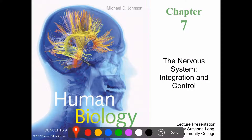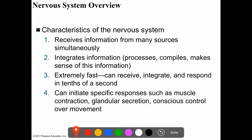Hello everyone, we are now in chapter 7 and we are going to study the nervous system. Think of the nervous system as the internet of the body, as it connects different parts of the body together and enables communication between them. To do this, the nervous system receives information from many sources simultaneously, integrates and processes this information, and responds to it.